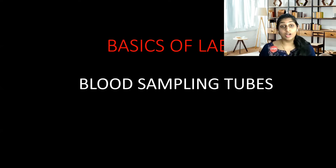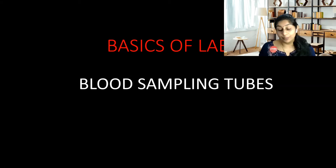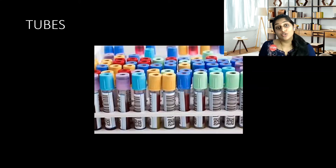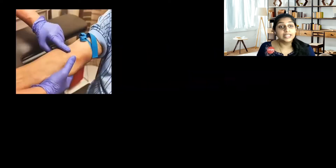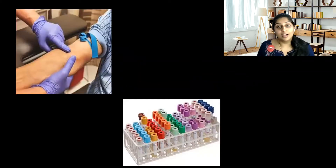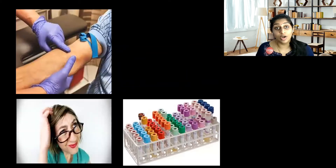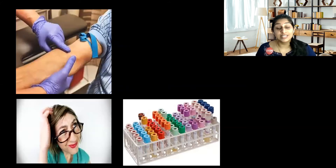Basics of laboratory — today I'm going to talk about sampling tubes. Sampling tubes is very important because everybody should know in which tube what sample has to be put. There are so many colored tubes in a laboratory, and we need to be very particular about which tube to use so that we don't confuse ourselves and get the report properly. After phlebotomy, when a new person or a beginner sees so many tubes, they are really confused. I think this video would help you clear all your doubts about sampling.